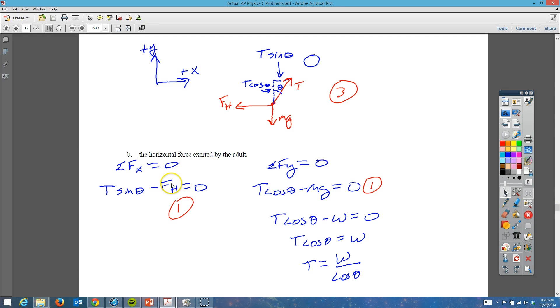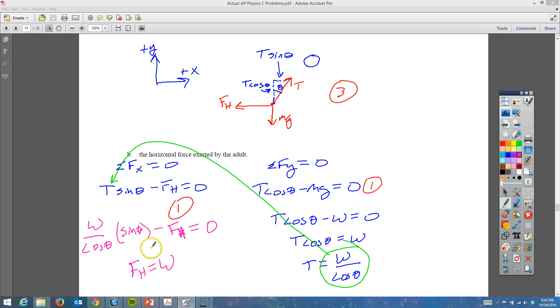It wants to know the horizontal force exerted by the adult, so we're going to solve for FH. But remember, we can only do this with W and with the angle. So we're going to take what we have right here and substitute it into the T that we see here. We've got W over the cosine of the angle times sine of the angle minus FH - FH, not FX, but FH is equal to zero. So our FH is going to be equal to W, and then sine over cosine is tangent of the angle.